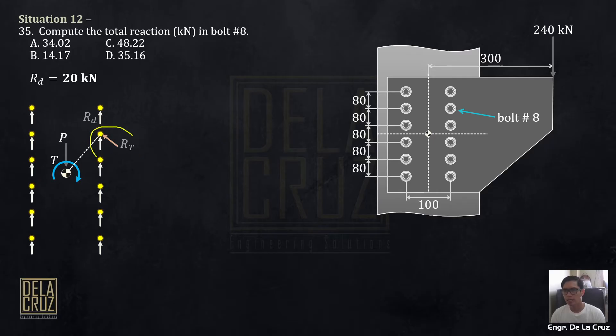This is the moment arm. You must determine the direction of the reaction due to torsion so we can add them. Now, if we analyze, if I will isolate that bolt number 8. The initial force there is RT. This R sub D, we will resolve that one to components. We have RTX and you have RTY. Okay? Again, the RT, we resolved to components. So, the total load here at that bolt is the resultant of all of those forces.